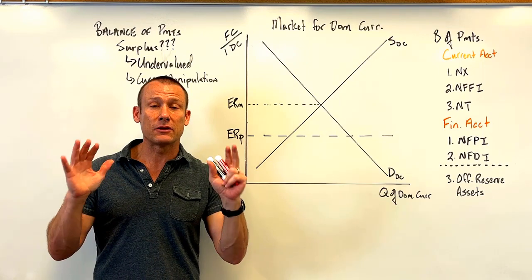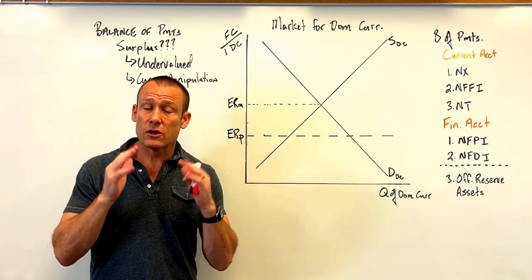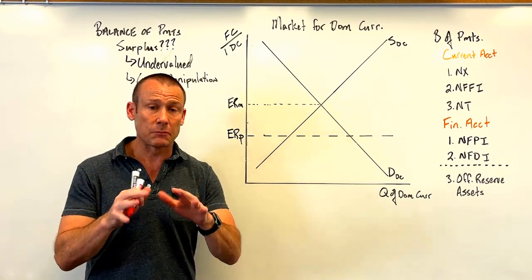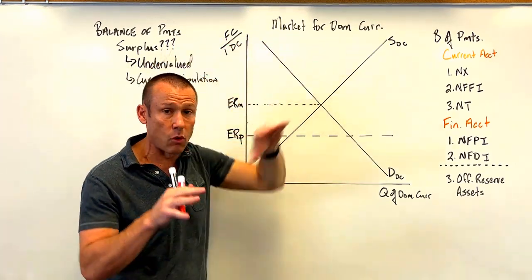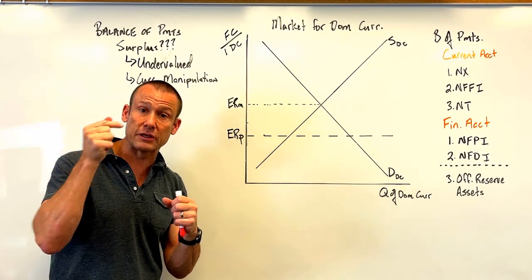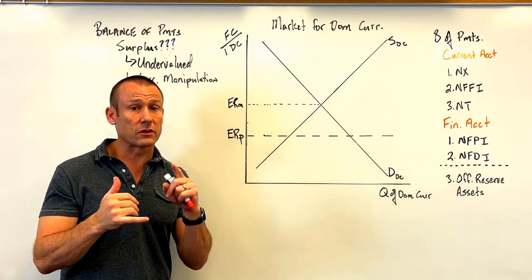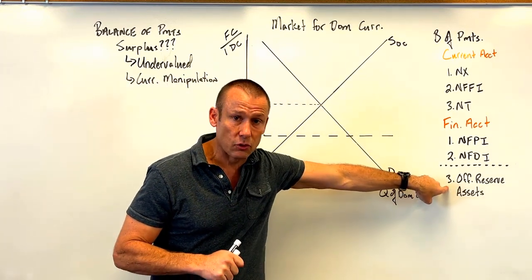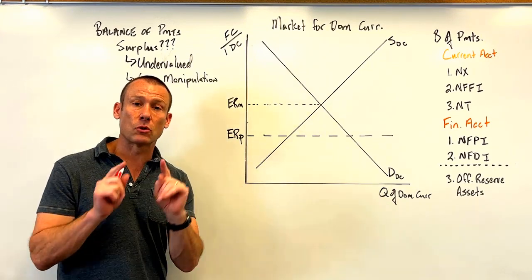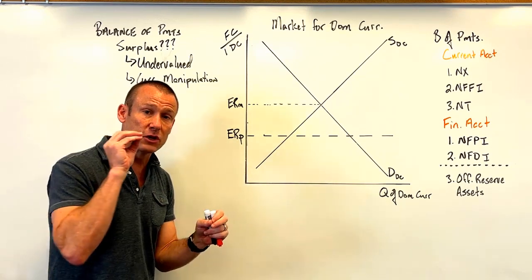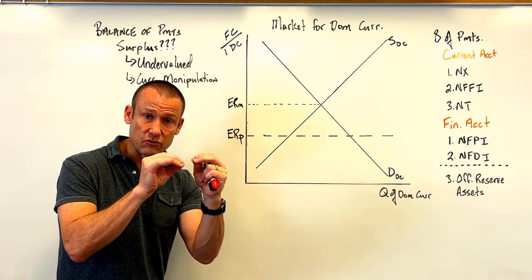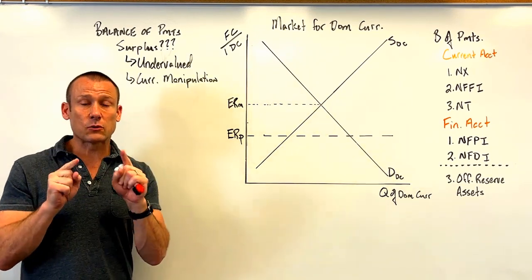Next, when do you get a balance of payments surplus? This is so important: not if you let your currency freely float. If your currency is free-floating, you're not going to run balance of payments surpluses. Balance of payments surpluses, just like balance of payments deficits, are associated with pegged exchange rates. The domestic country has pegged the value of their currency to another currency — usually the dollar or the euro, which are official reserve assets. So a balance of payments surplus only happens if you have a pegged exchange rate.